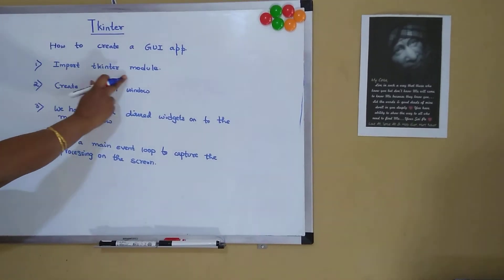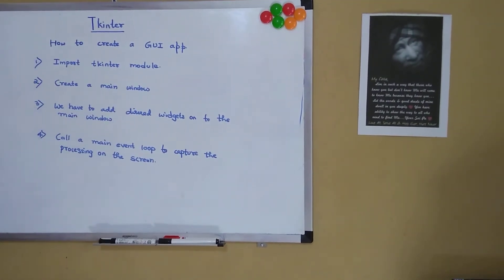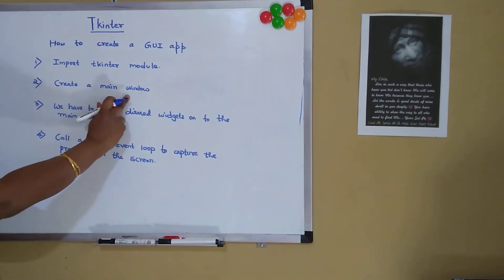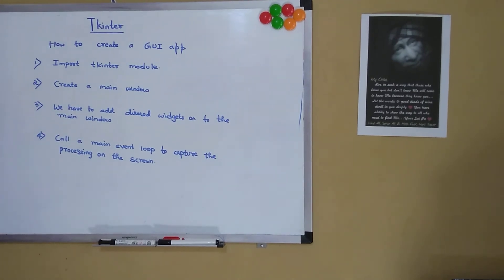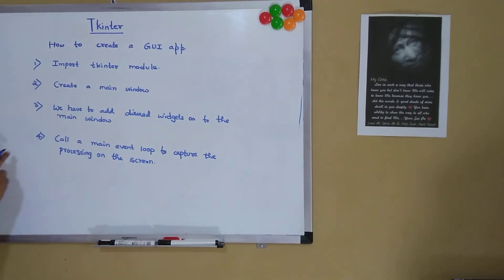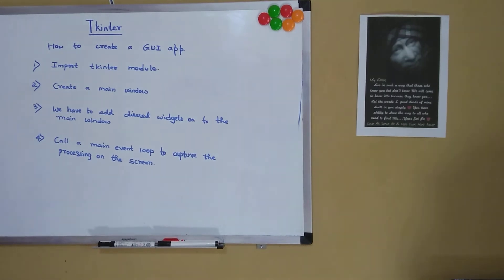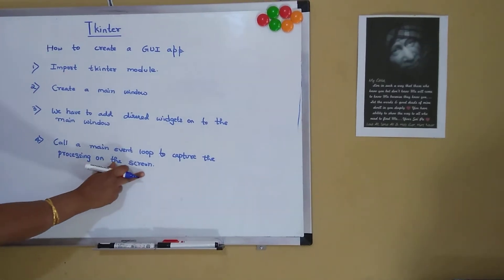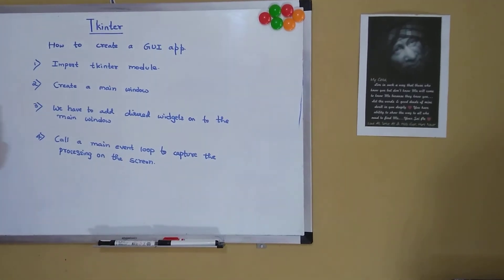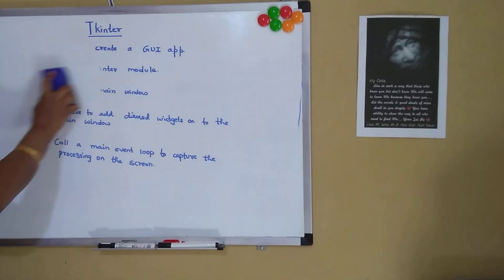So these are the four steps to remember while creating a GUI application. First, import the tkinter module. Second, create a main window. Third, add the desired widgets on the main window created in step two. Fourth, call the main event loop, which runs in an infinite loop and captures all the processing happening on the screen.